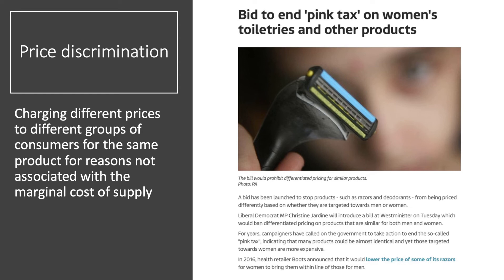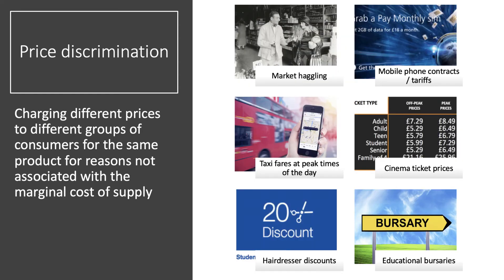The pink tax is where female consumers buying very similar products to male consumers end up paying more for things like razors and beauty products. But there are many examples of price discrimination, and you'll need to know the different types, the conditions for it to happen, and evaluate the costs and benefits. Off-peak and peak pricing, haggling in street markets, student discounts and cinema ticket prices are great examples.